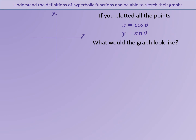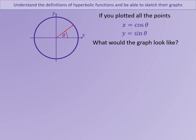If you were to plot all of the points represented by the equations x equals cos theta and y equals sin theta, what would the graph look like? You may like to experiment with this, putting in different values of theta. The points you would get, if you were to plot them in pairs, would form a circle. This is the circle x squared plus y squared equals 1, or the unit circle with a radius of 1.